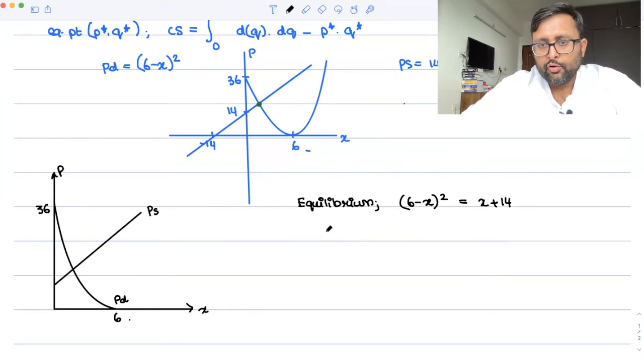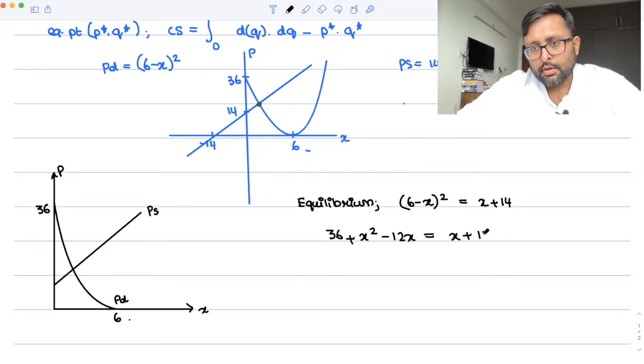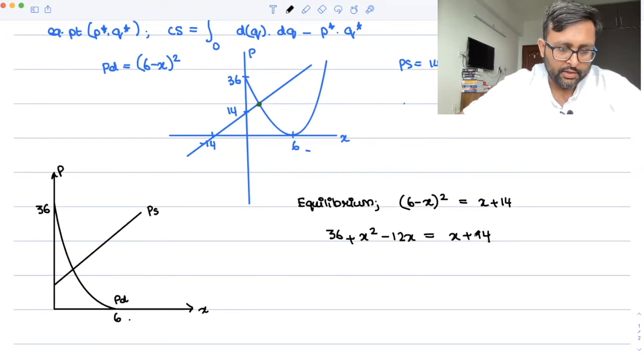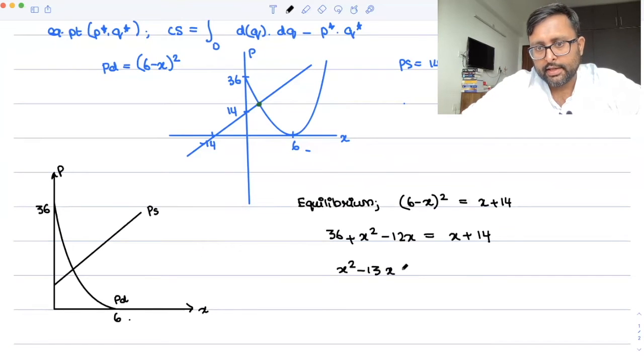So when you will open this up, you will be getting 36 plus x square minus 12x is equal to x plus 14. And when you will solve this up, you will be getting x square minus 13x plus 22 is equal to zero.